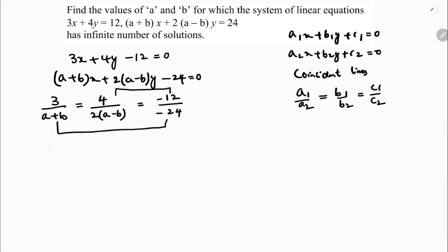Now the first one is 3 by (a plus b) equals minus 12 by minus 24, which is nothing but 1 by 2. So if we will cross multiply, a plus b is 2 times 3 is 6. This is one equation.